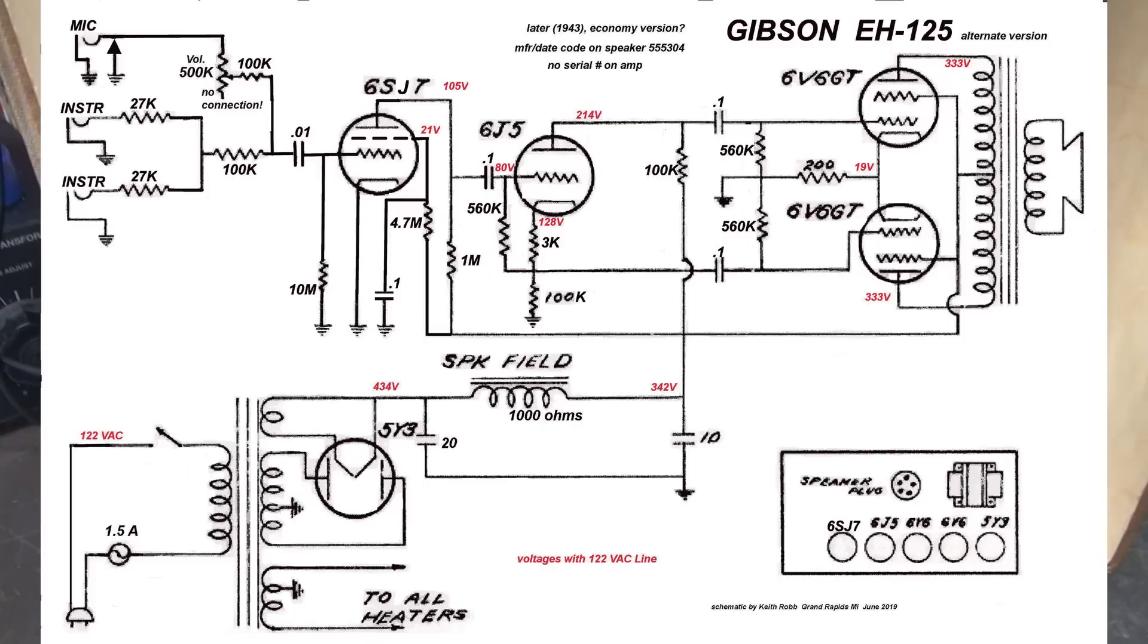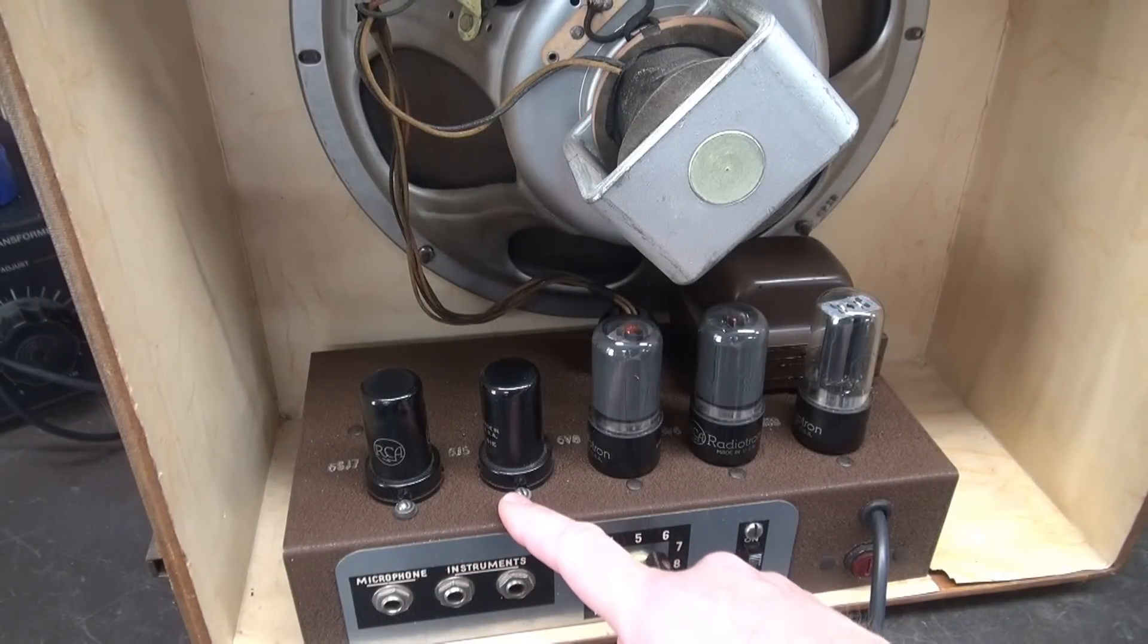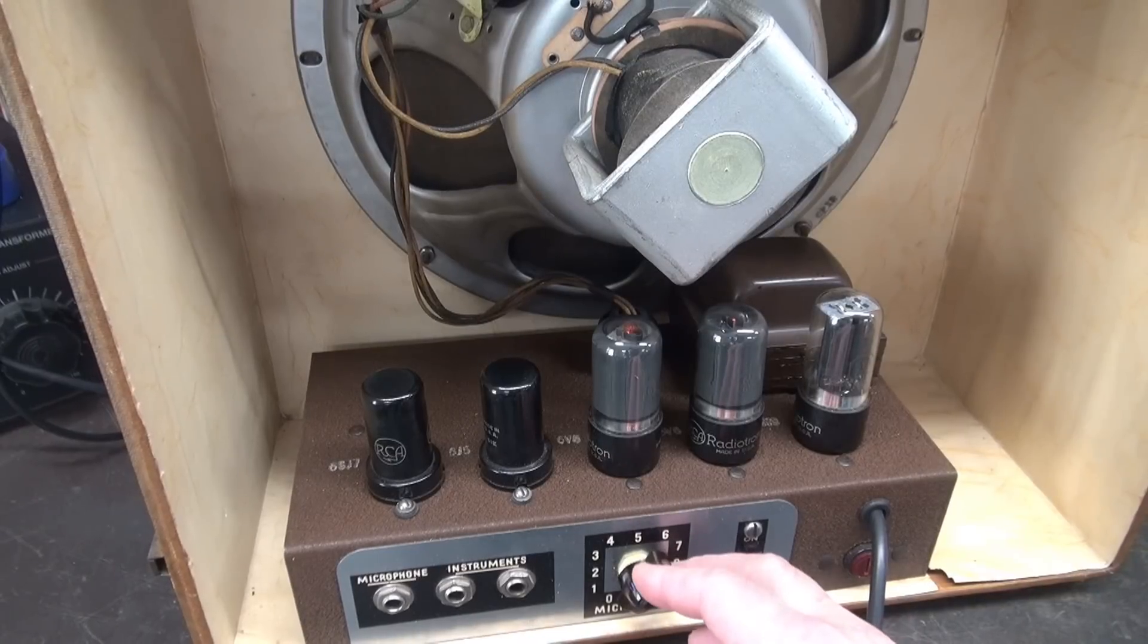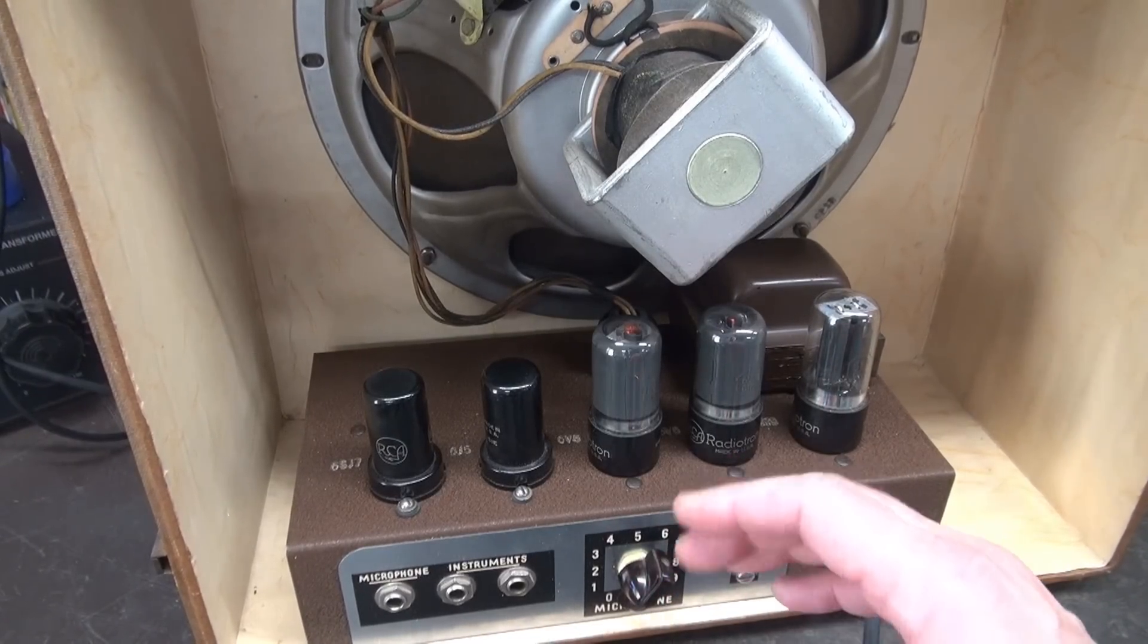So what I do is I swing that wiring from the input to being in between the 6SJ7 and the 6J5. And of course, I make sure to ground the pot so it does its job. You'll see this in the video as we move along.